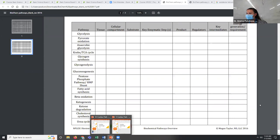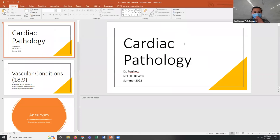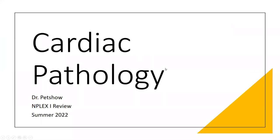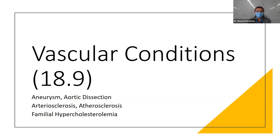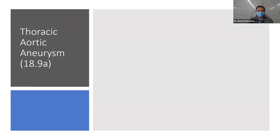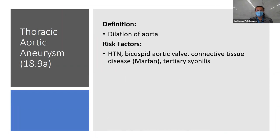Vascular conditions: first, aneurysms — thoracic aortic aneurysm and abdominal aortic aneurysm (AAA). An aneurysm is simply dilation of the aorta. Risk factors include anything increasing pressure or changing output flow to the aorta: hypertension, bicuspid aortic valve (most common congenital cardiovascular cause), connective tissue diseases like Marfan's (decreased compliance), and tertiary syphilis. Pathogenesis: aortic root dilates, which can lead to valve regurgitation, dissection, or rupture.